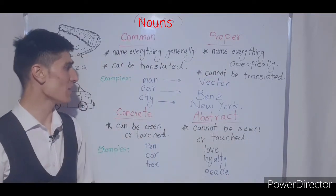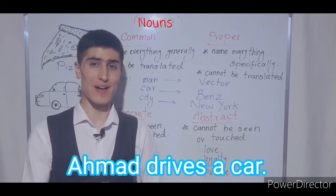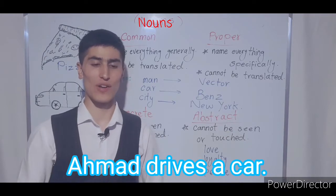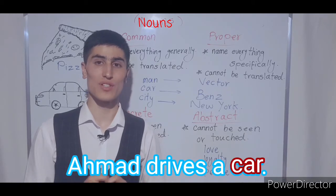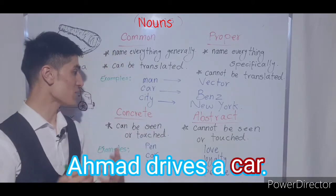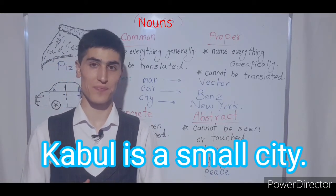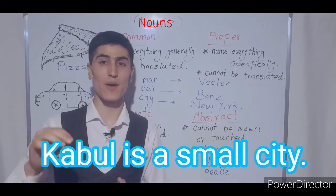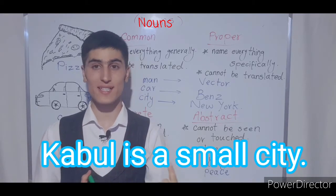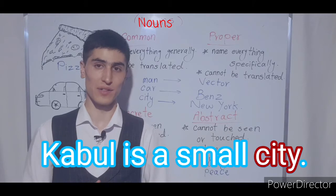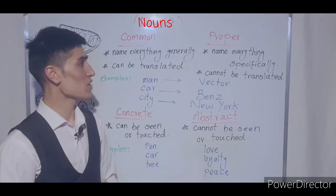For example: 'Ahmad has a car' — here the noun is 'car,' which is a common noun. Or another example: 'Kabul is a small city.' In this example we have two nouns: one is 'Kabul' and the next one is 'city,' which is a common noun.